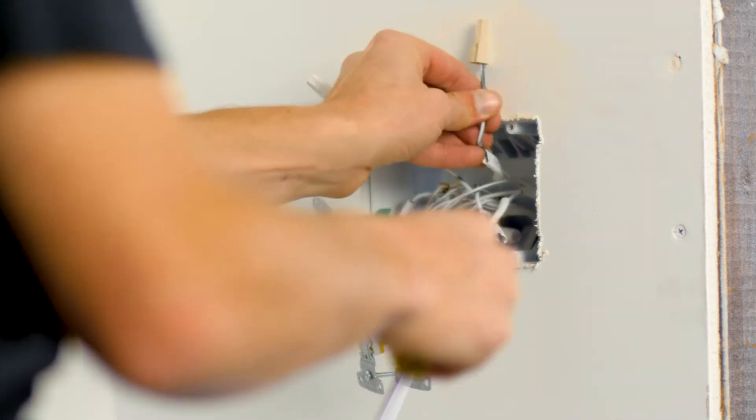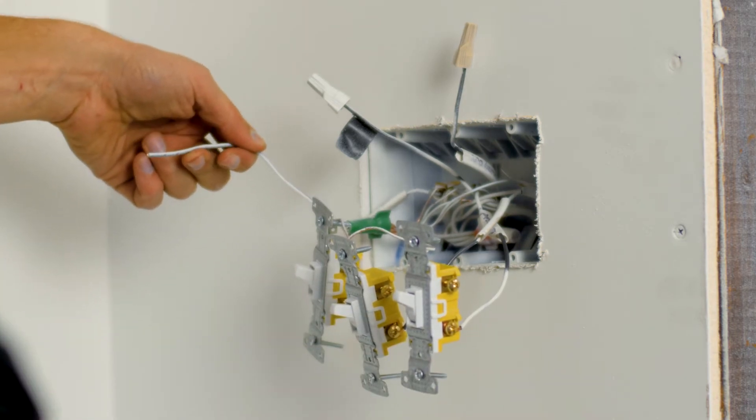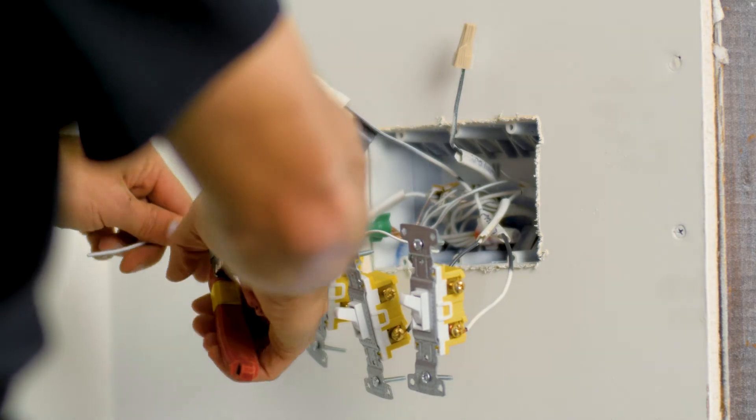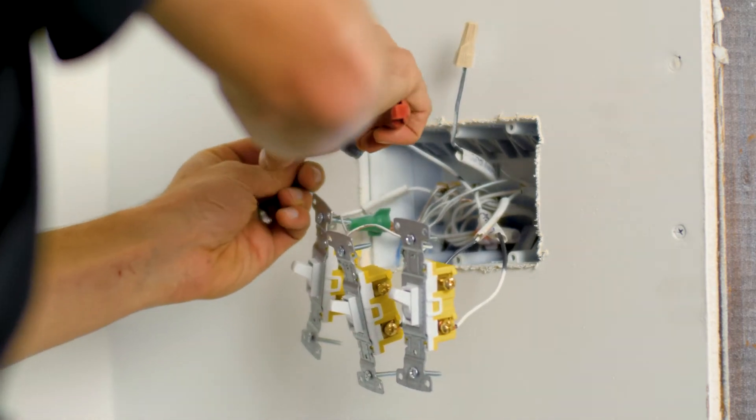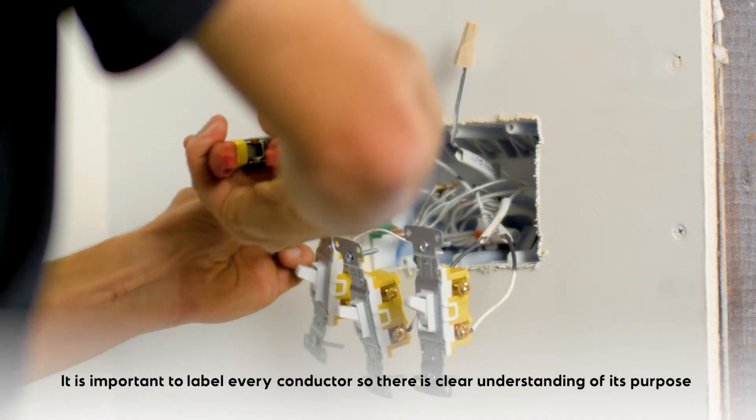This requires a hot feed. That's my hot pass out of the box. This is my final switch leg here, and this is my hot into the box designated by the flag. It's important to label every conductor every time to make its purpose and intention clear for a clean finish.